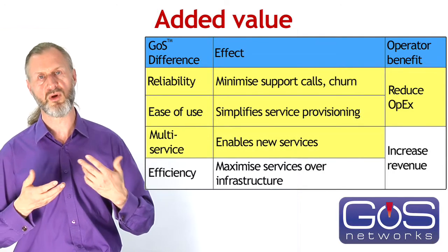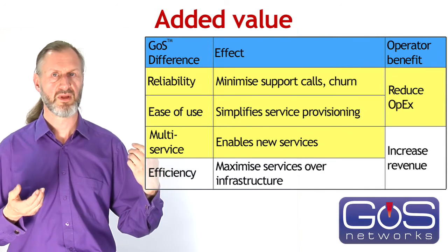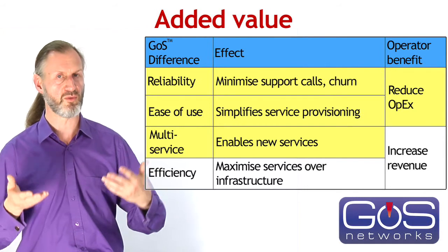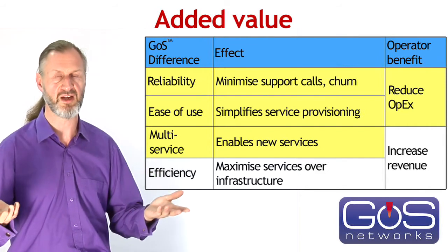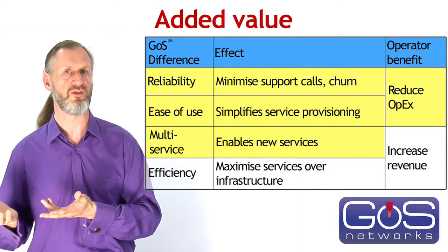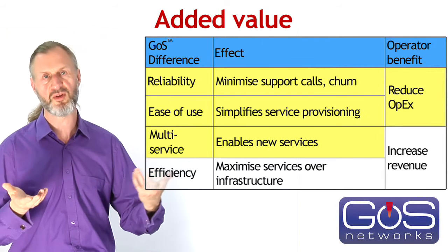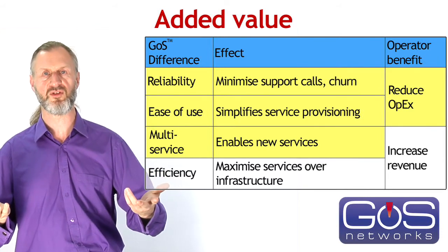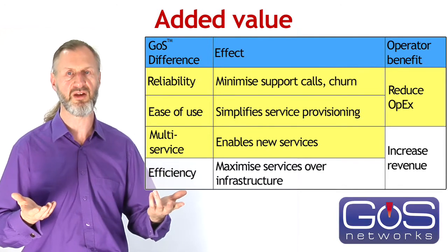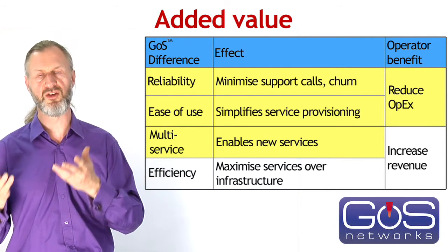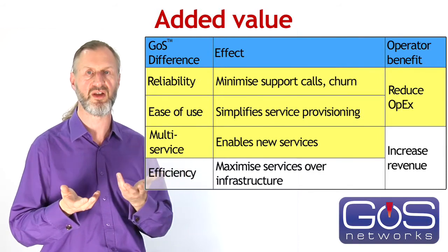GOSS supports multiple services — real-time, near real-time, and critical data simultaneously — enabling the provision of new services. One of the benefits of a converged IP network is that it's easy to launch a new service because it's just another stream of packets, but that stream has to be given the right QoS treatment. Rather than having a QoS mechanism optimized for one particular class of traffic such as voice, GOSS is a general-purpose mechanism that can support multiple kinds of applications and can easily be reconfigured to adapt to a new set of services — any set of services, as long as the capacity of the link will hold it.